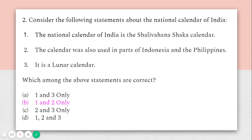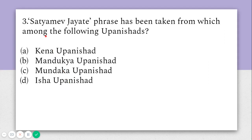The second statement says the calendar was also used in parts of Indonesia and the Philippines, which is also correct. The third statement says it is a lunar calendar, which is incorrect — it is actually a solar calendar. So the answer is B, that is, only statements one and two are correct.